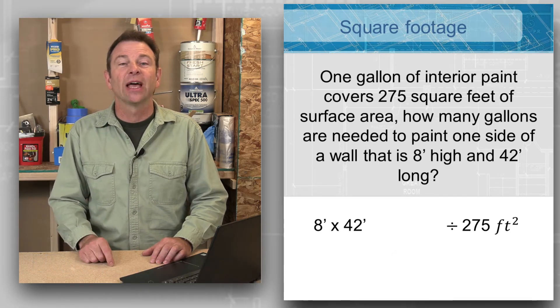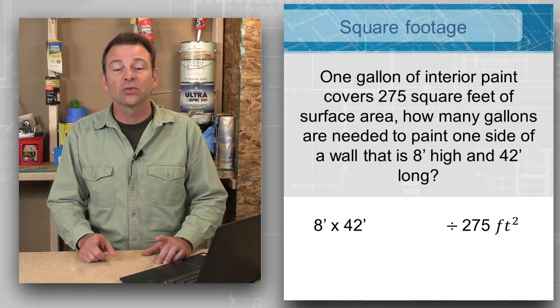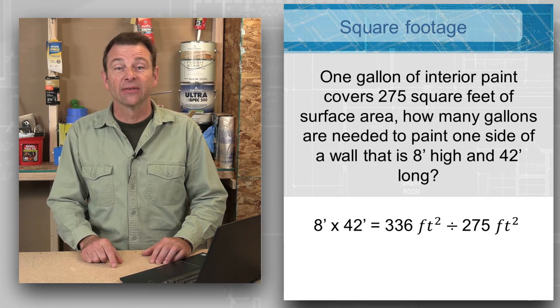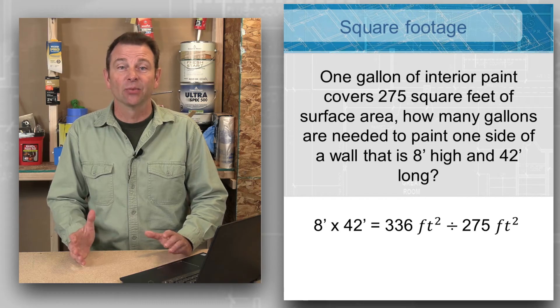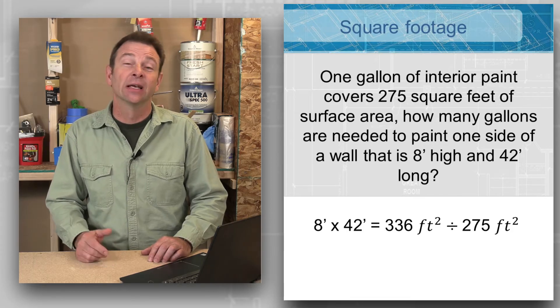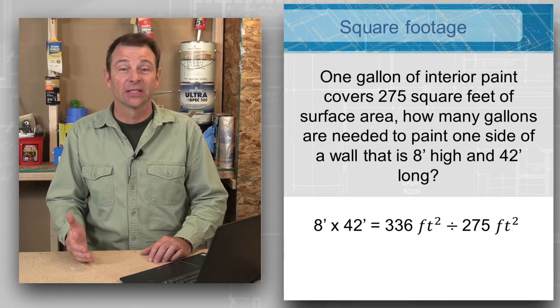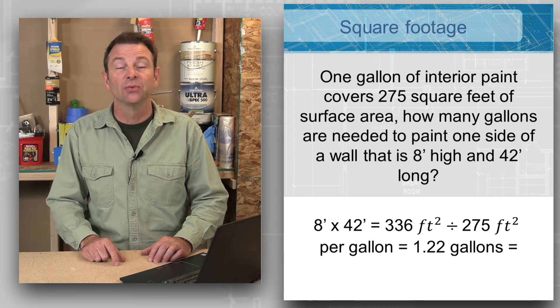Given that we have eight feet times 42 feet, which when we multiply those together is going to give us 336 square feet. That is the job that we're trying to coat. We can divide that by our 275 square feet, that is our yield per gallon of this particular paint, and that's going to give us a number of 1.22 gallons.